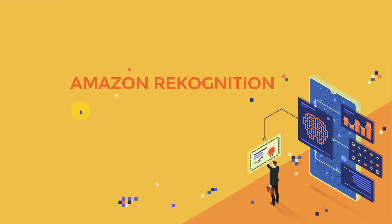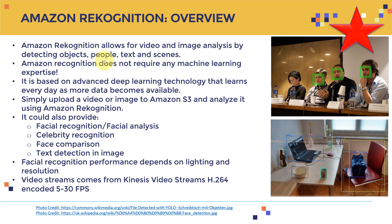Hello everyone and welcome to this new lecture. I hope you guys enjoyed the YouTube video which gave you an overview of the top five level services. Let's get started with Amazon Rekognition. Amazon Rekognition allows for video and image analysis by detecting objects, people, text, and scenes. Amazon Rekognition does not require any machine learning expertise, which is amazing.